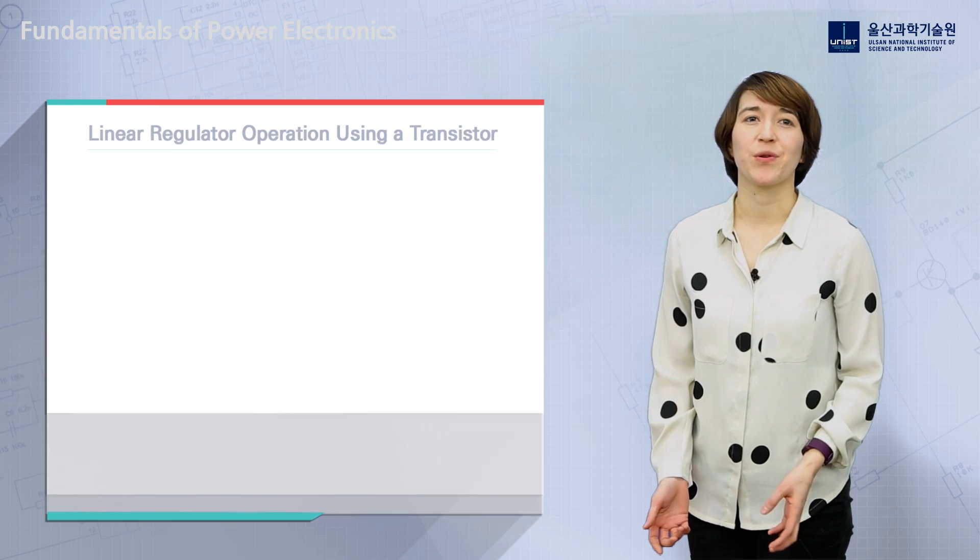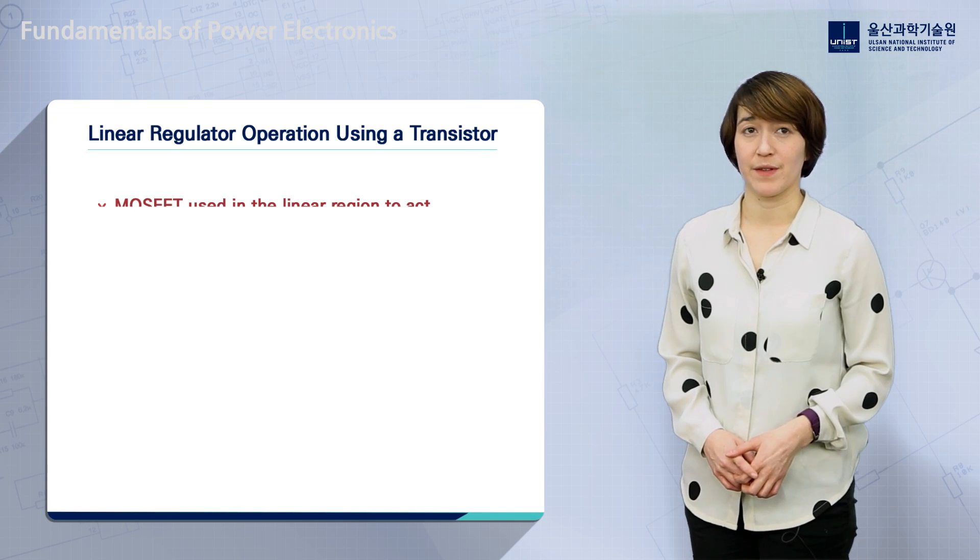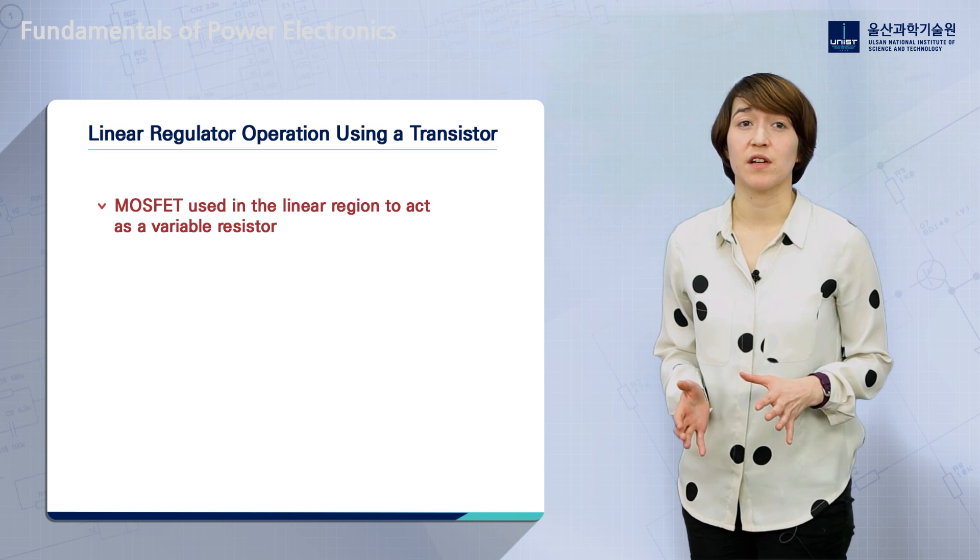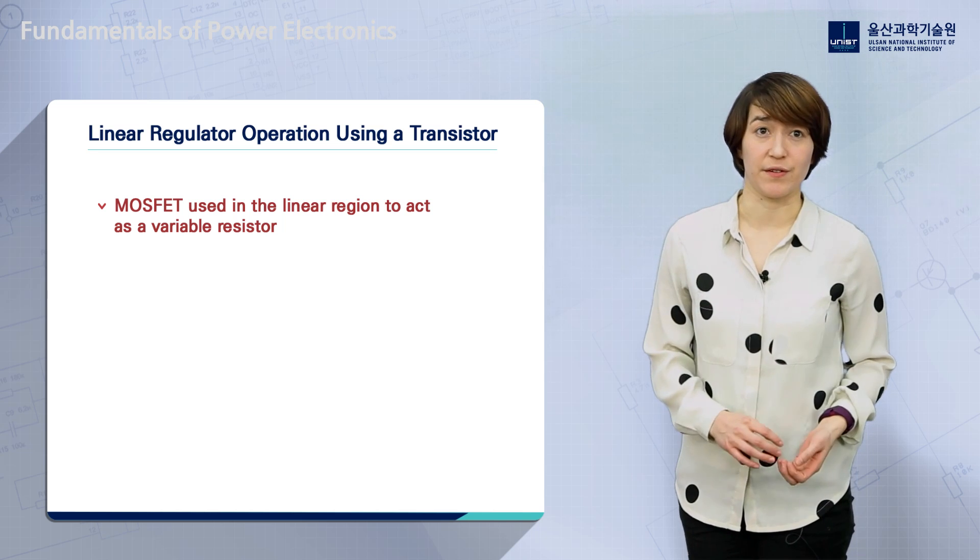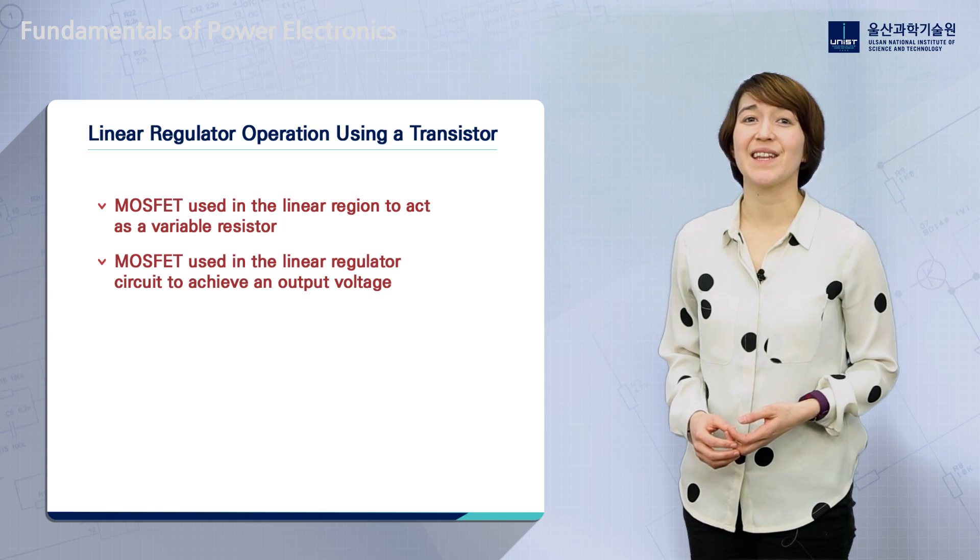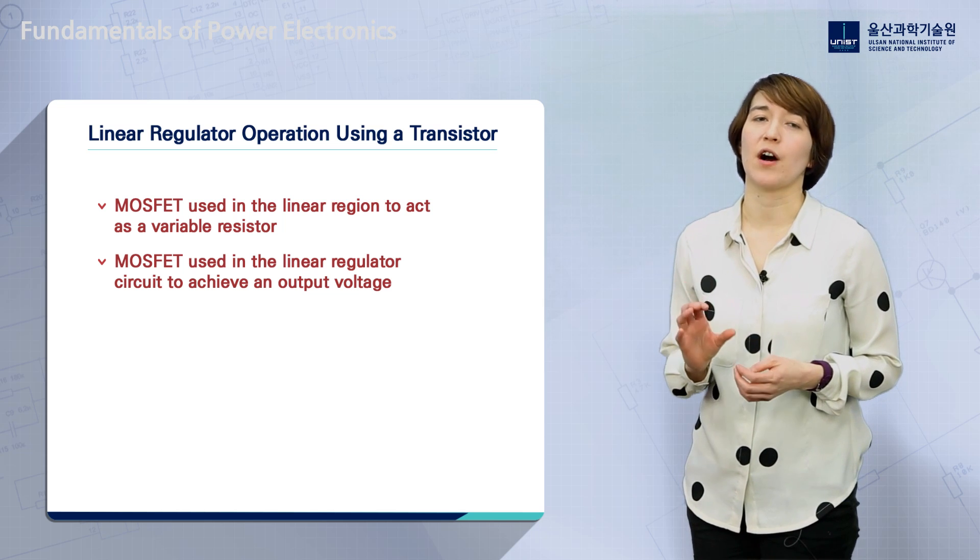So far, we have introduced the MOSFET and its basic operation. We've shown how a MOSFET can be used in the linear region to act as a variable resistor, and how that variable resistor is then used in a linear regulator circuit to achieve a specific output voltage.